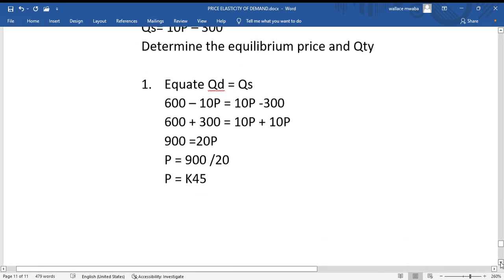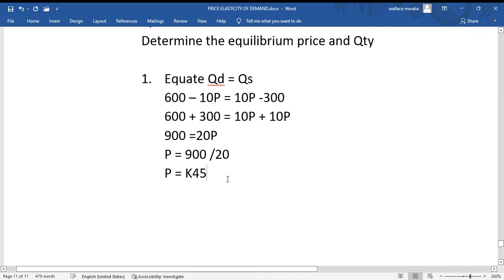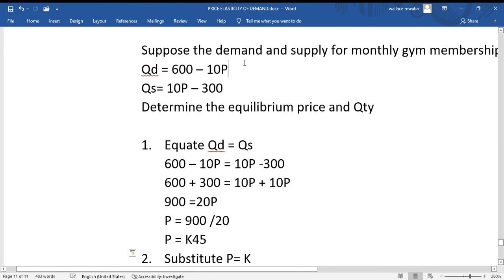Okay, so after we find the equilibrium price we'll find the equilibrium quantity. So to do that we're just going to substitute P equals 45 Kwacha. We've got two equations - this is equation one, this is equation two. We can substitute P equals 45 Kwacha into any of these two equations.